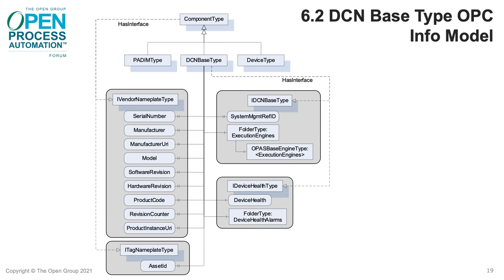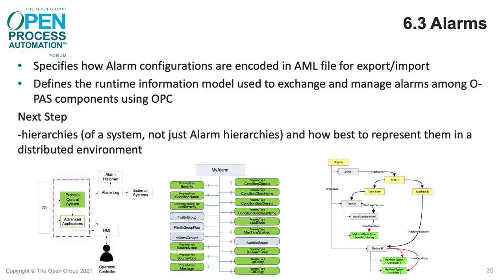Here's an OPC information model of a DCN providing the same interfaces as PA-DIM for vendor information such as make, model, and serial number, health information, and we've added a function block engine. Part 6.3 specifies how alarm configurations are encoded in AML for export and import, and it defines the runtime information model used to exchange and manage alarms among OPAS components using OPC. Next, we'll be defining hierarchies and how best to represent them in a distributed environment.